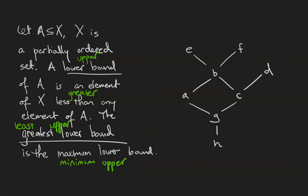Let's consider the partial order where h is less than g, g is less than a and c, a is less than b, c is less than b and d, and b is less than e and f. Let's isolate the subset a, b, c.